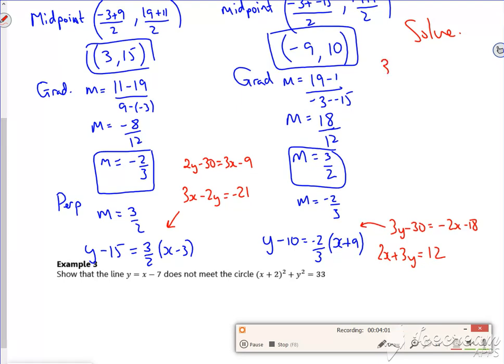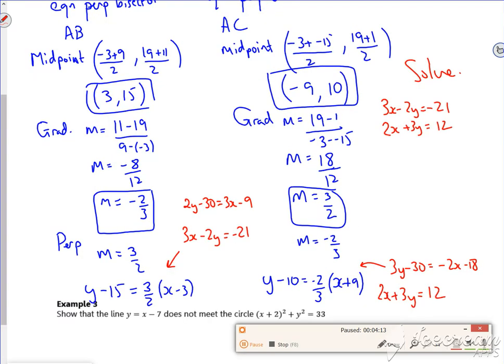3X minus 2Y is minus 21, and 2X plus 3Y is 12. I'm going to pause it there, because I don't trust my homework. So hang on a sec. Checked it so it works. So this will give us a centre, if you solve it, of minus 3, 6.